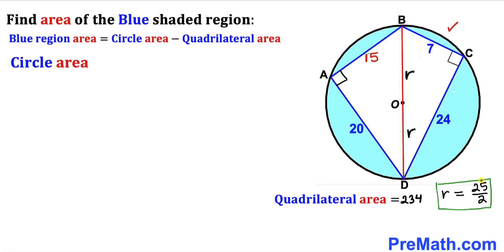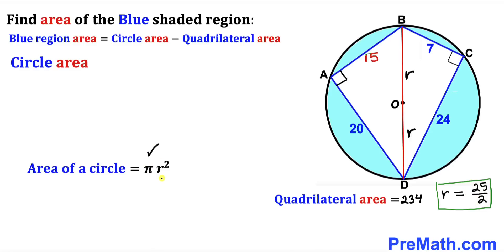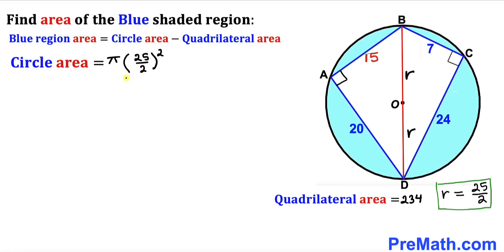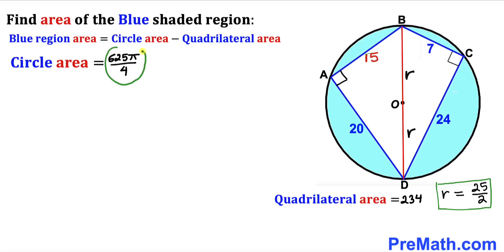Now let's calculate the area of the circle whose radius is 25/2. Using the formula Area = πR², the area equals π × (25/2)² = 625π/4 square units.